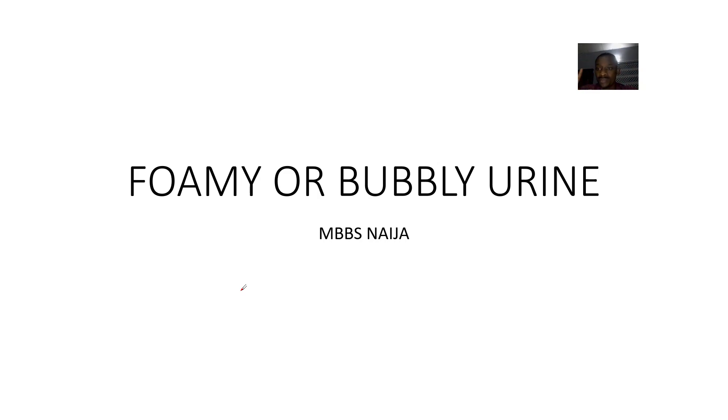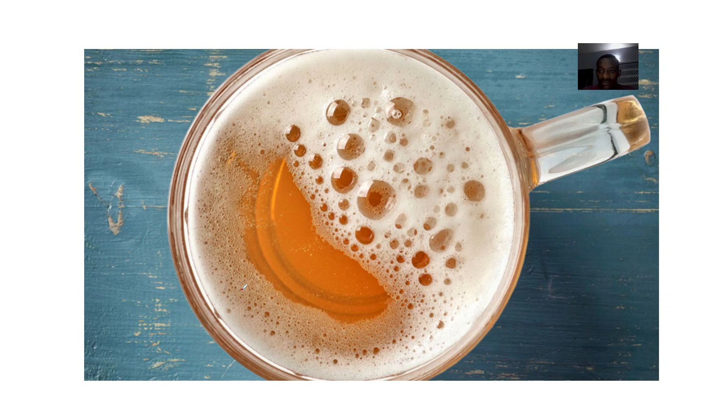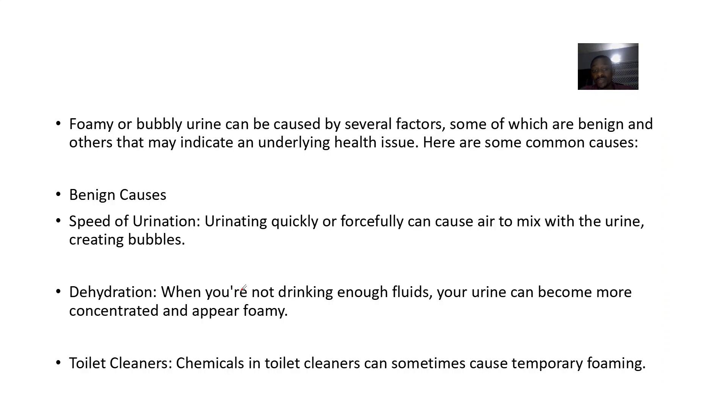We already looked at proteinuria, and one of its characteristics is that urine will be foamy or bubbly. I didn't actually have a good image in that proteinuria lecture to illustrate foamy or bubbly urine, so the main focus of this lecture is to illustrate those images — so that anytime you see bubbly urine, you know what it looks like. Foamy or bubbly urine would look something like this.